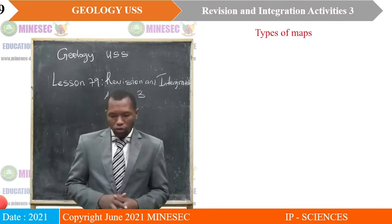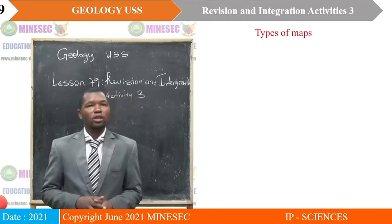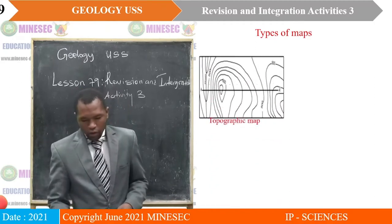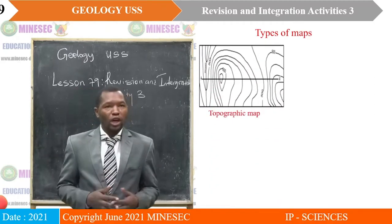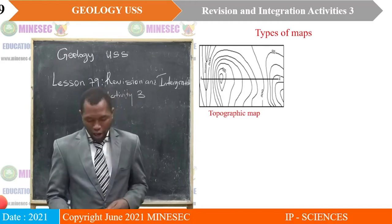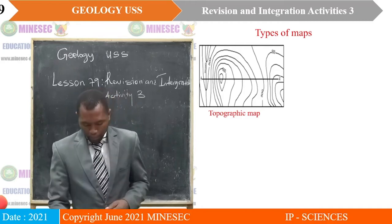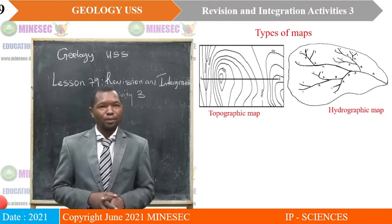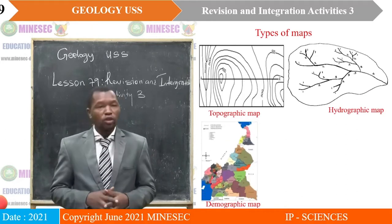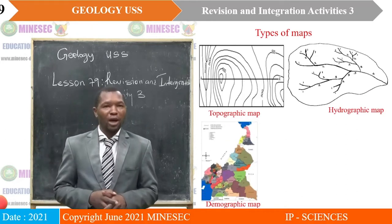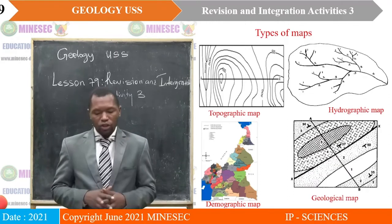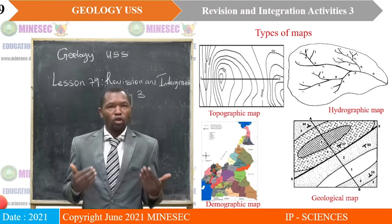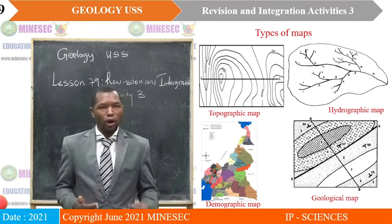We saw different types of maps. We saw topographic maps, hydrographic maps, demographic maps, and geological maps. So we saw four main types of maps.